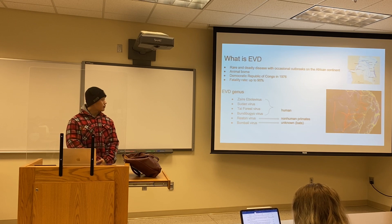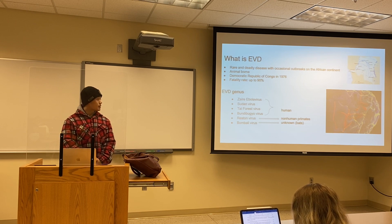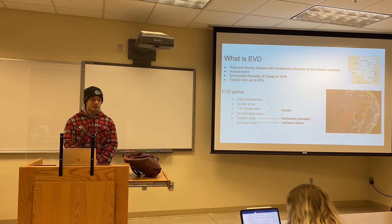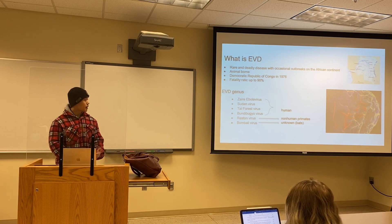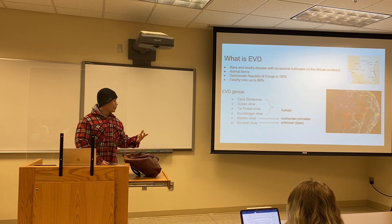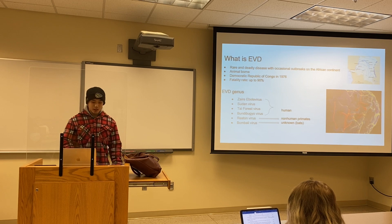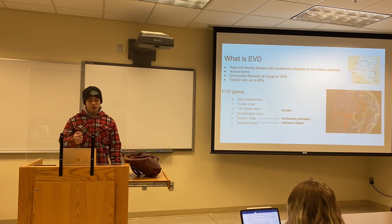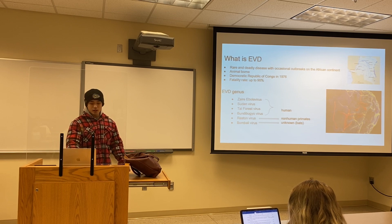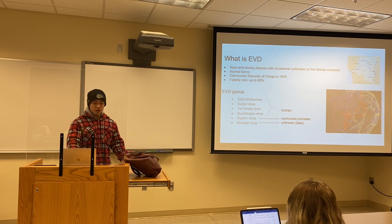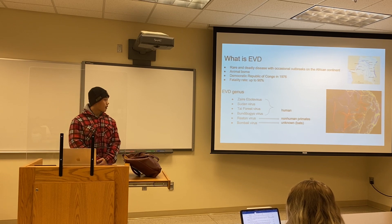Ebola virus is an animal-borne virus and it's a very deadly virus, with a fatality rate that can go up to about 90%. There are seven names of this virus, all falling under the Ebola virus disease genus: Zaire Ebola virus, Sudan virus, Tai Forest virus, Bundibugyo virus, Reston virus, and Bombali virus. The first five of the seven viruses are known to cause disease in humans and are actually very harmful.